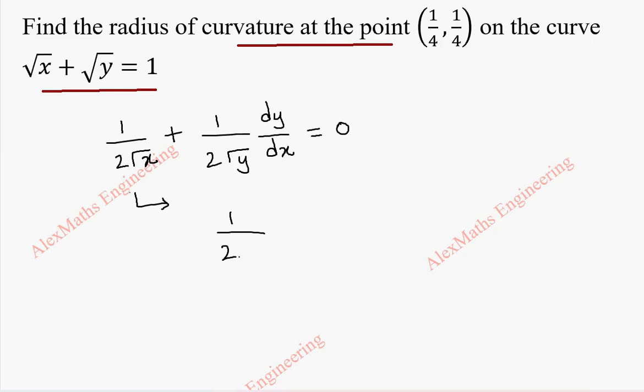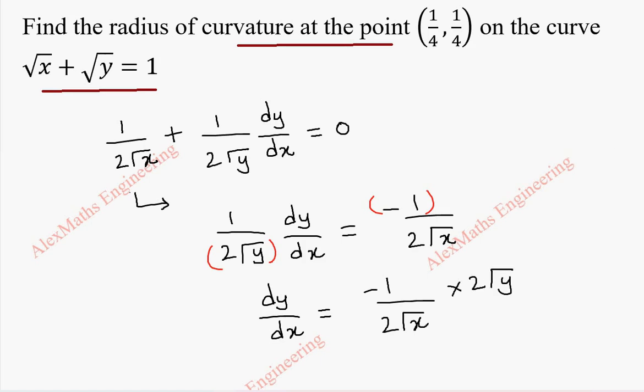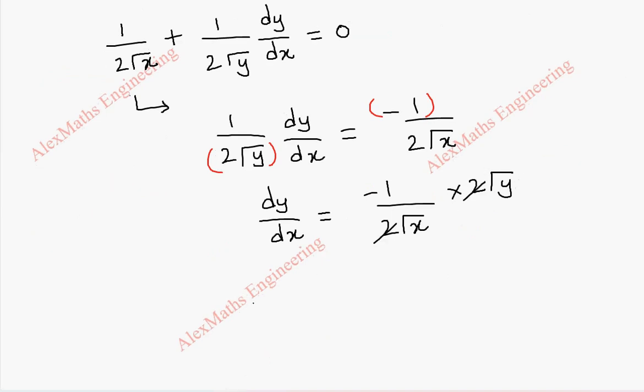So, 1 by 2 root y into dy by dx equal to minus 1 by 2 root x and we cross multiply. So, this term will get multiplied in the other side numerator. So, dy by dx equal to minus 1 by 2 root x into 2 root y. We can cancel 2 and 2. So, from this dy by dx is minus root y by root x.